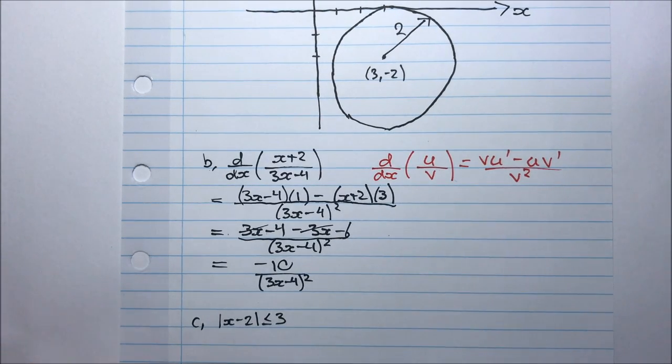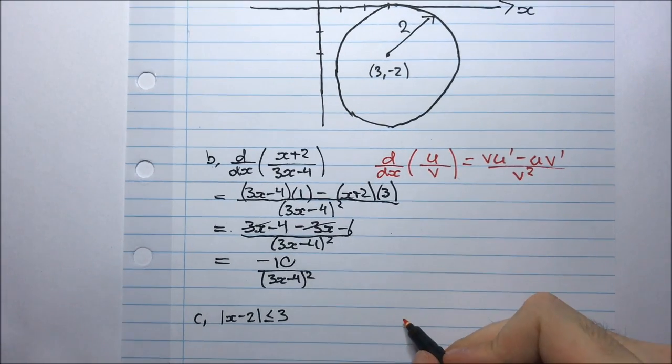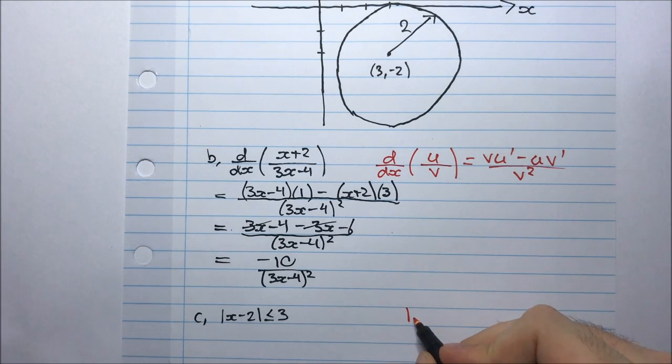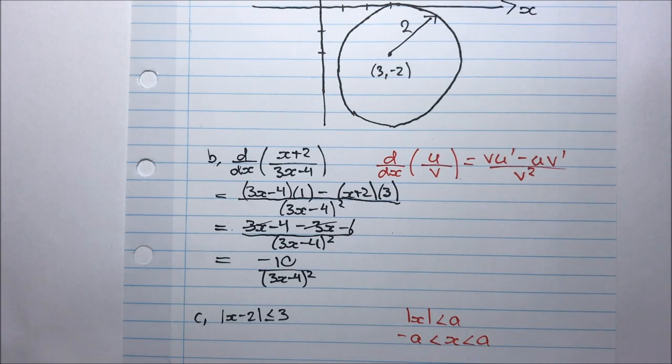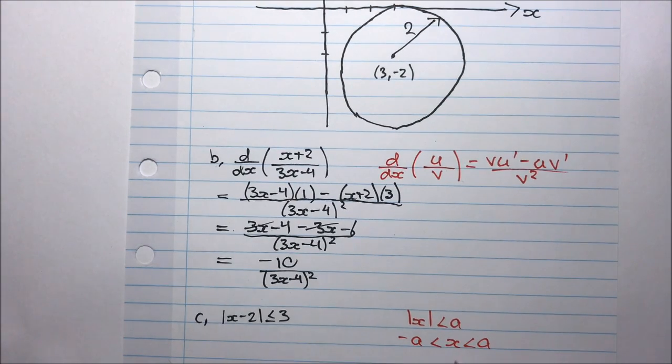Now another thing to remember: if I have |x| < a, all that means is I'm writing this in a more compact way. I'm writing -a < x < a. So this is just a more compact way of writing this.